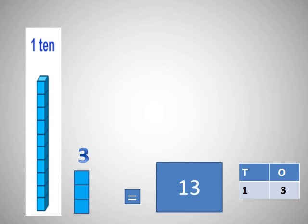Similarly, in this picture you can see one ten and three ones. So, it is equal to thirteen. In tens place we will write one and in ones place we will write three.